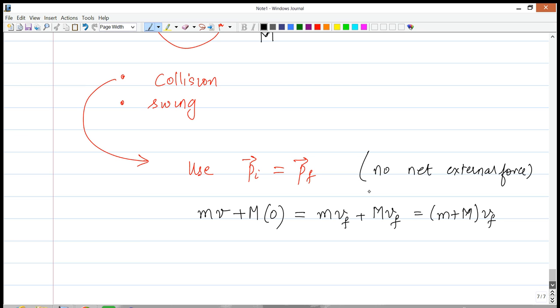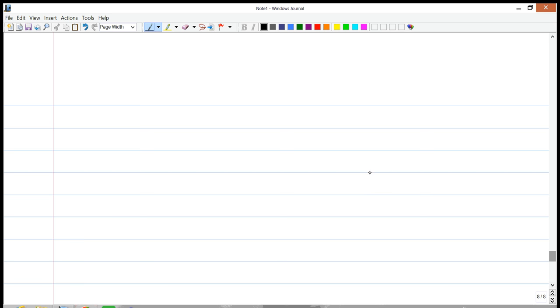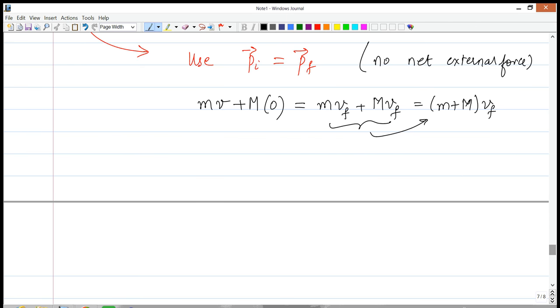In fact, algebraically, you see that this middle part simply leads to that. So you can think of it either ways and it'll give you the same answer. Now, once we have this, what we know now is that mv is equal to m plus capital M times v_f. And now we have v_f. v_f is equal to mv divided by m plus capital M. Great. We have the speed.